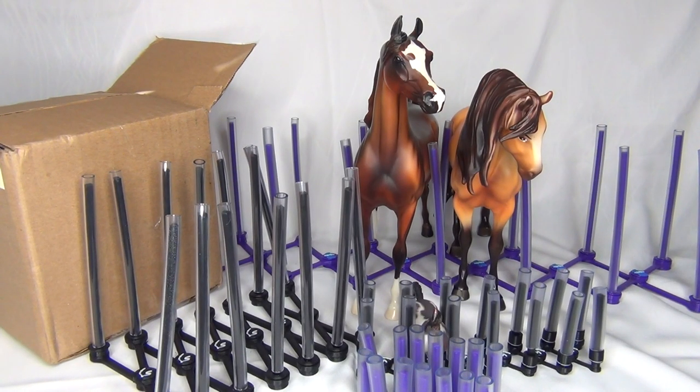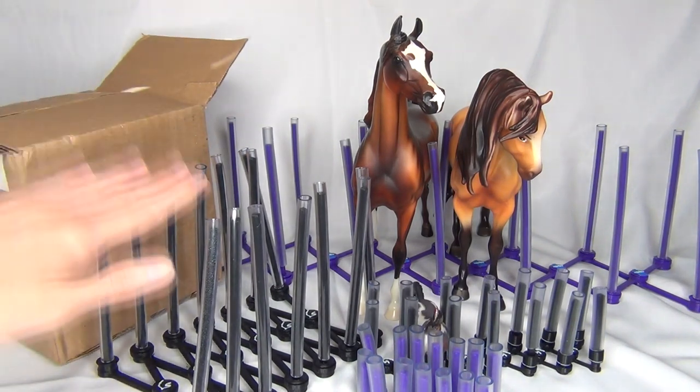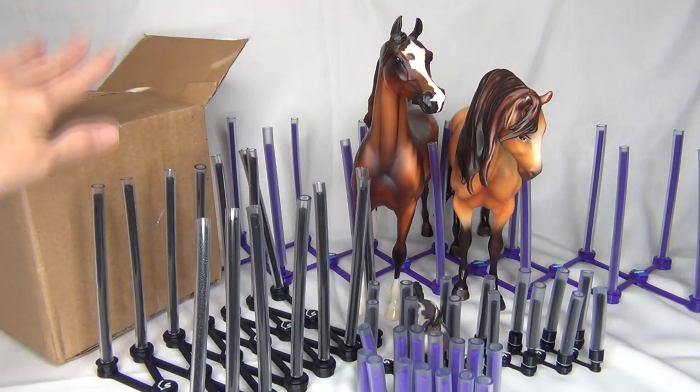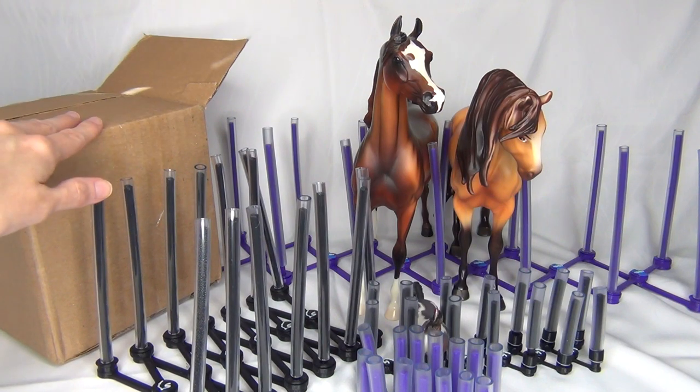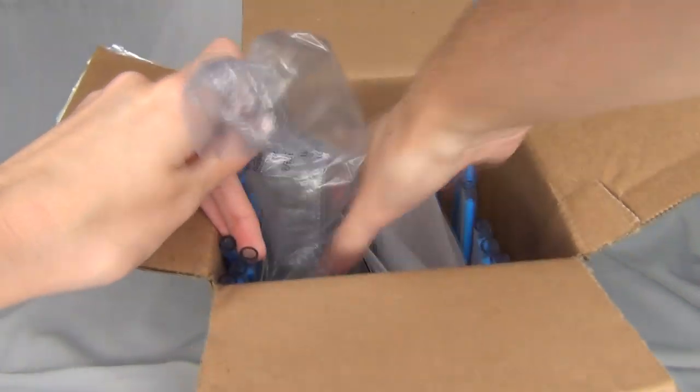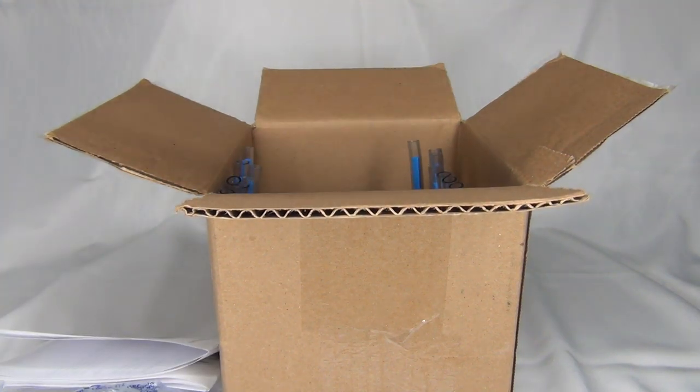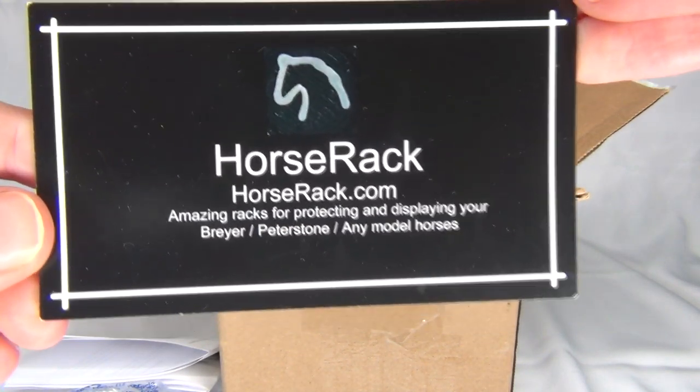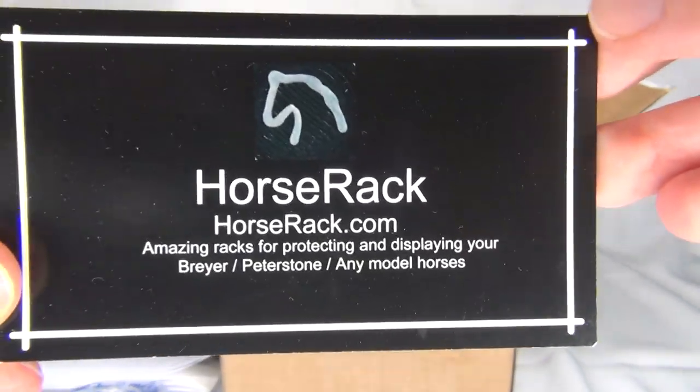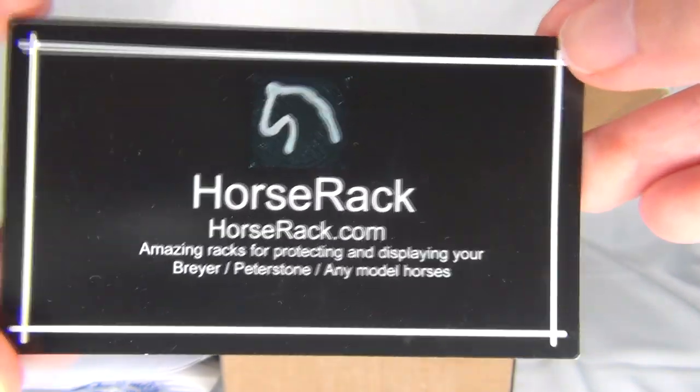Let's actually get into unboxing the version 2 horse racks and compare them to the original version and see just how more awesome the new version of horse racks are. And here we go unboxing the brand new version of horse racks. Here is also their little business card, and they are for sale on multiple places online like eBay, Amazon, Etsy, and on their website.